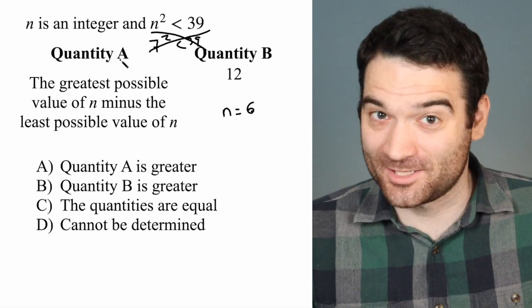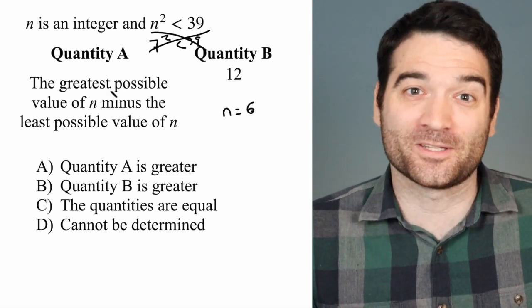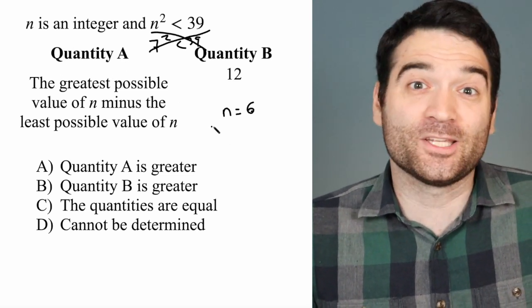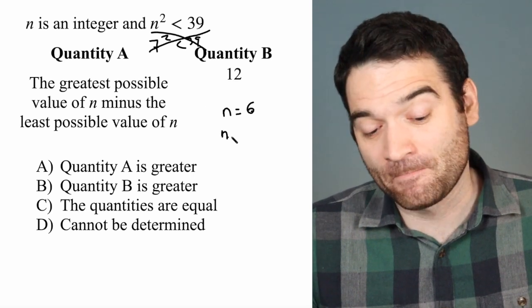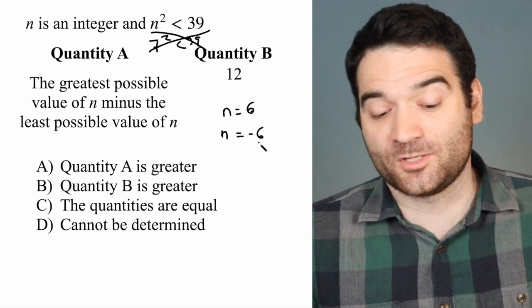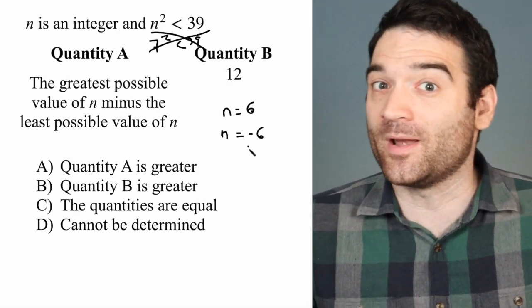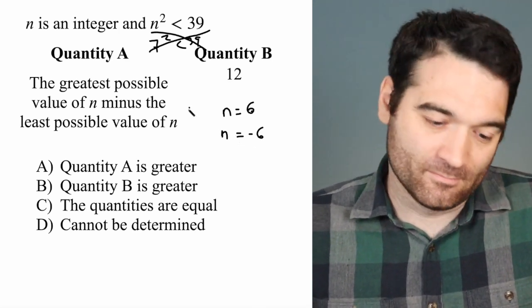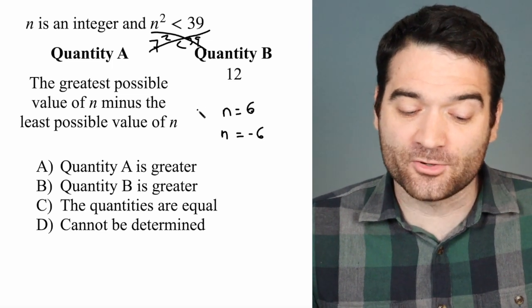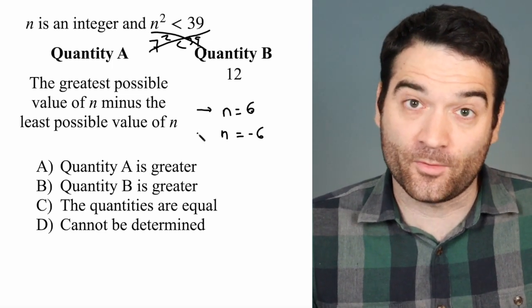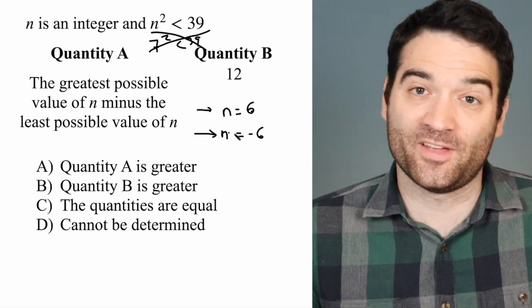So -1² is positive 1, -2² is positive 4, and so on. This is really just a mirror image of what we just did. We know that the lowest possible value of n is -6, because if we go any lower than that to -7, we run into the same problem. So here's the greatest possible value, and here's the least possible value.